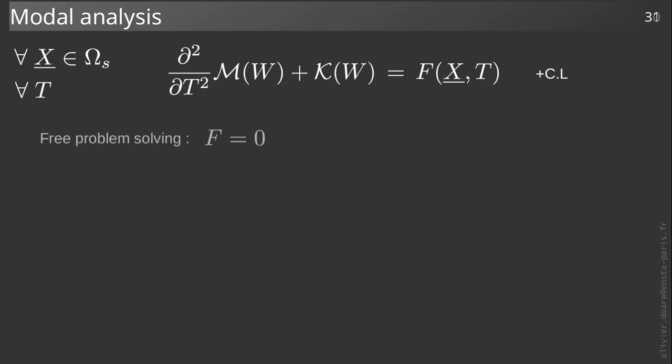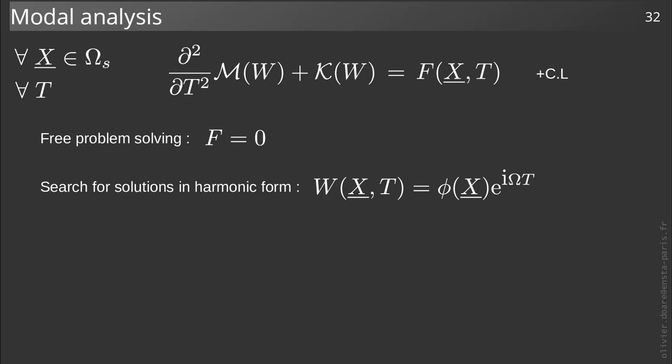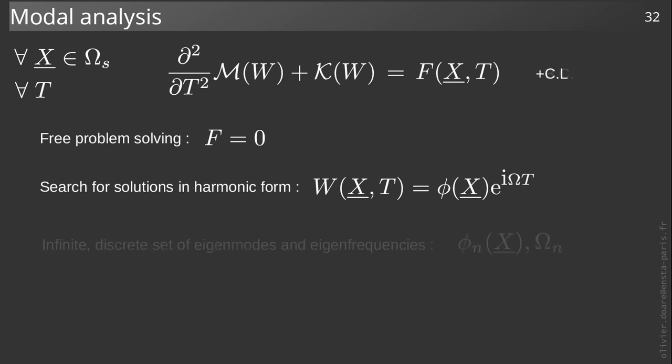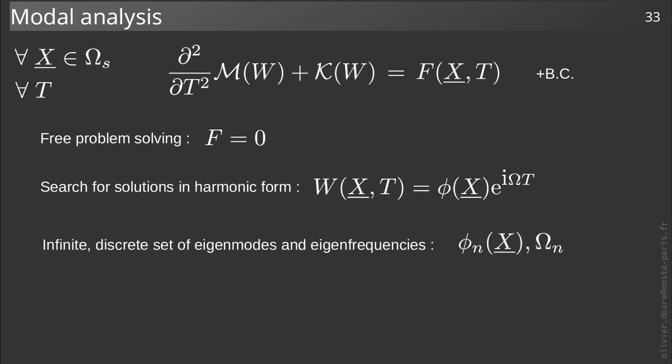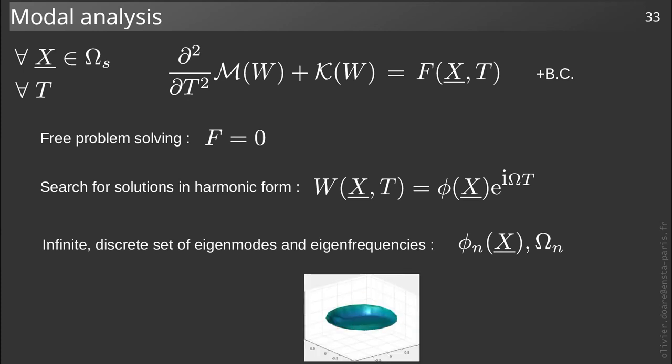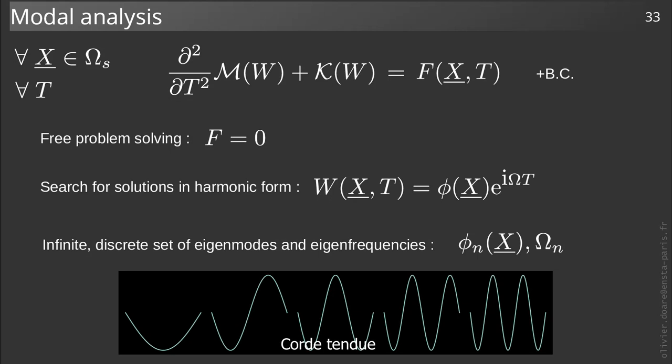For the free problem, which means for f equals zero, we know that the solution can be obtained by looking for solutions in the form with separate variables where the time dependence is harmonic. The introduction of this solution into the dynamical equation then gives a problem called the Sturm-Liouville problem, for which there are an infinite number of independent solutions in the form of pairs of eigenfunctions φn and eigenfrequencies ωn. Here are some examples.